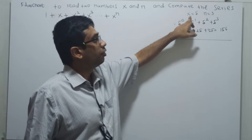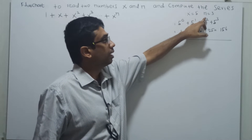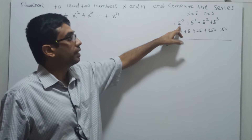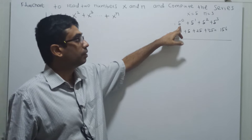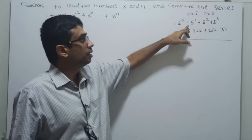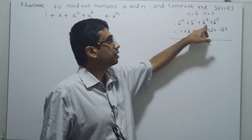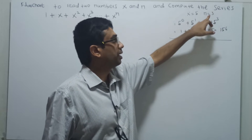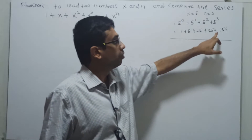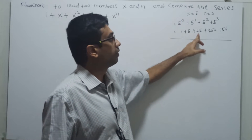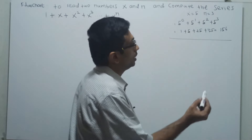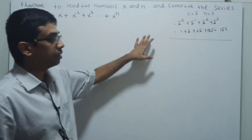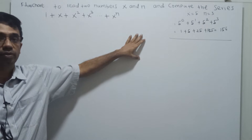For example, if the given value x equal to 5 and n equal to 3, we have to calculate the sum of 5 power 0 plus 5 power 1 plus 5 squared up to 5 cubed — that means n equal to 3. So the value is 156: 1 plus 5 plus 25 plus 125 which is equal to 156. So for this problem, we are going to draw a flowchart.